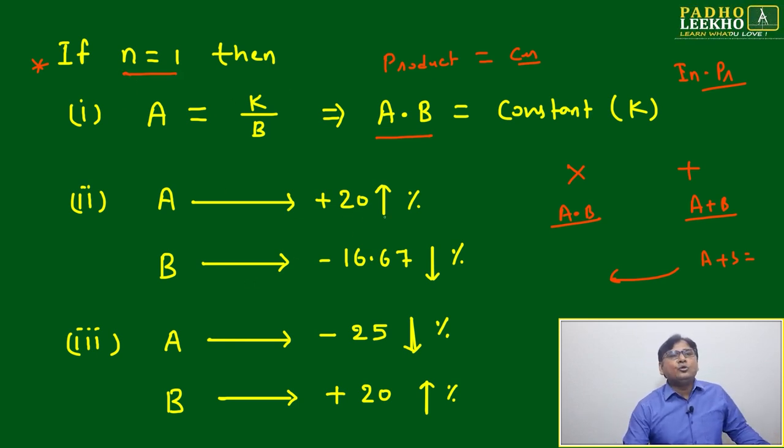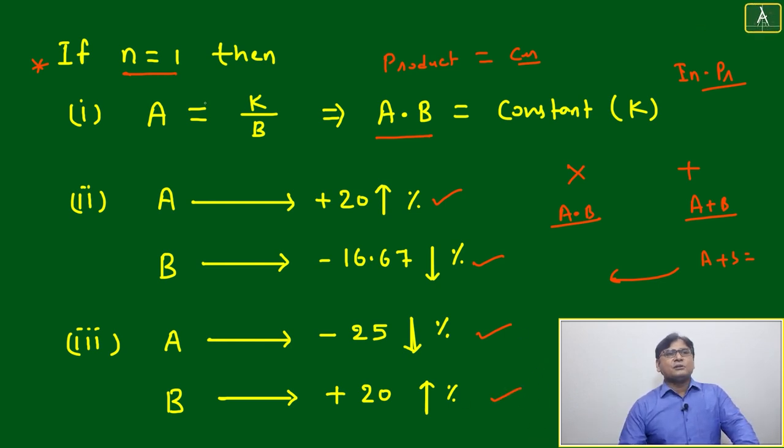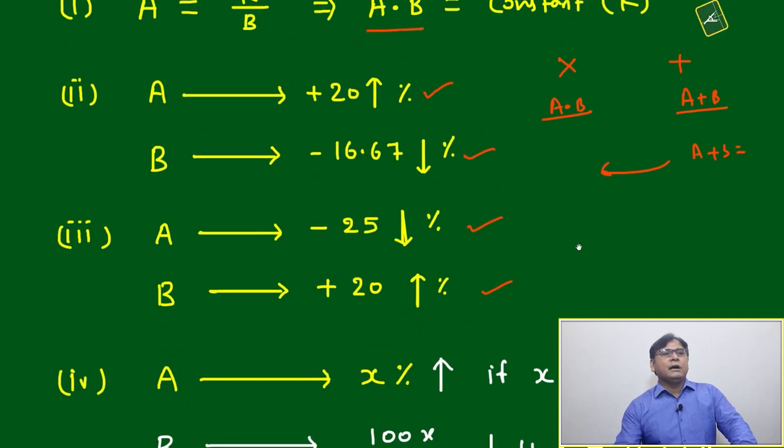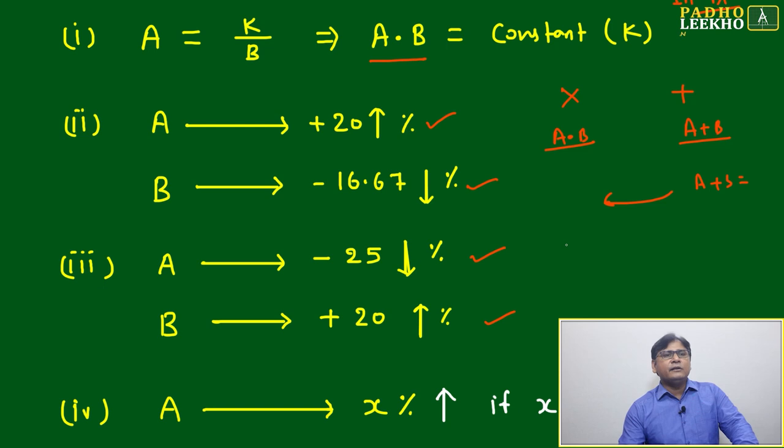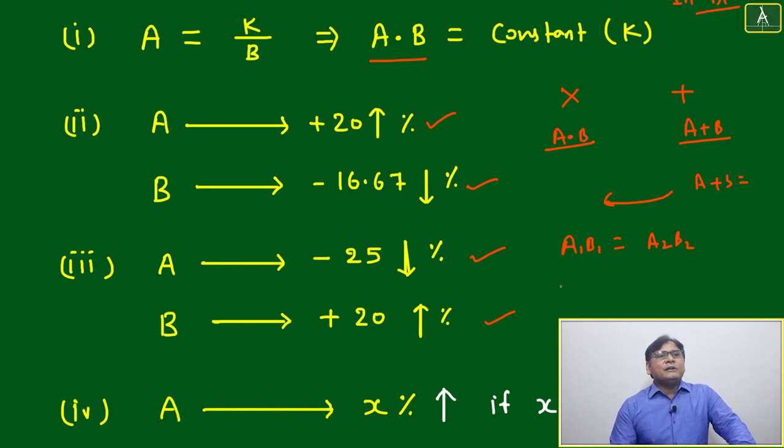In this case, if n equal to 1, just we'll try to look: A equal to 20 increasing, B will down 16.67 percent. If A is decreased by 25 percent, B will increase by 20 percent. We can just calculate in simple way, there is not much issue. If you want to calculate in traditional way, you can just write A·B equal to constant.